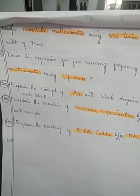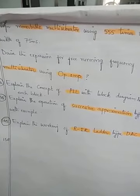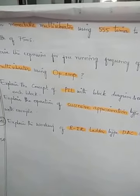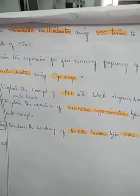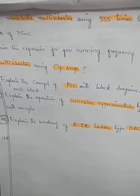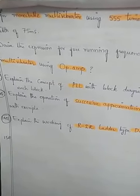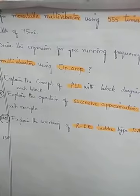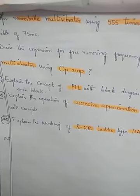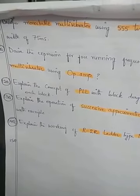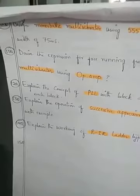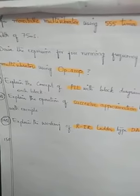The next question is: design a monostable multivibrator using a 555 timer to generate a pulse width of 75 milliseconds. We discussed how the 555 timer works as a monostable multivibrator. Write and explain that, noting that the pulse width Td equals 75 milliseconds. Try that one.